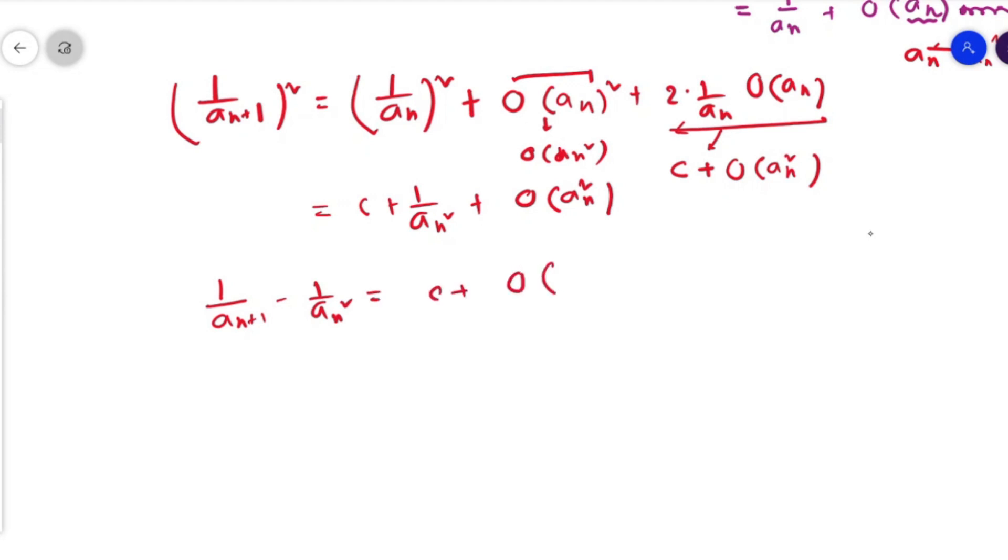From here it's easy to see that 1/a_n² - 1/a_{n-1}² is also equal to c + O((n-1)²), and this thing should go up to 1/a_1² - 1/a_0² = c + O(a_1²).